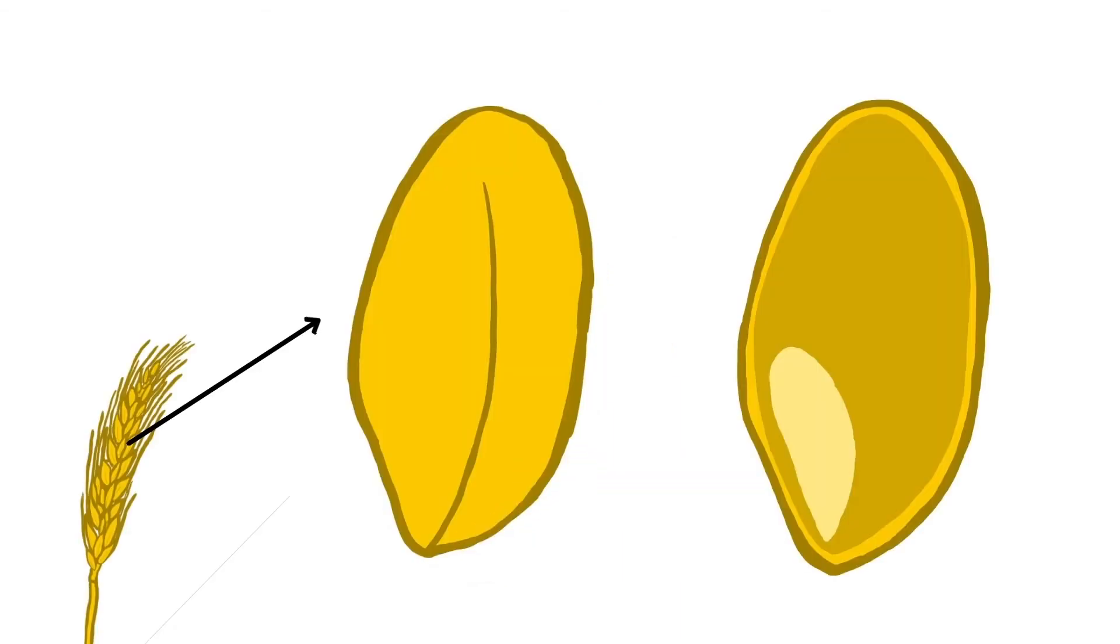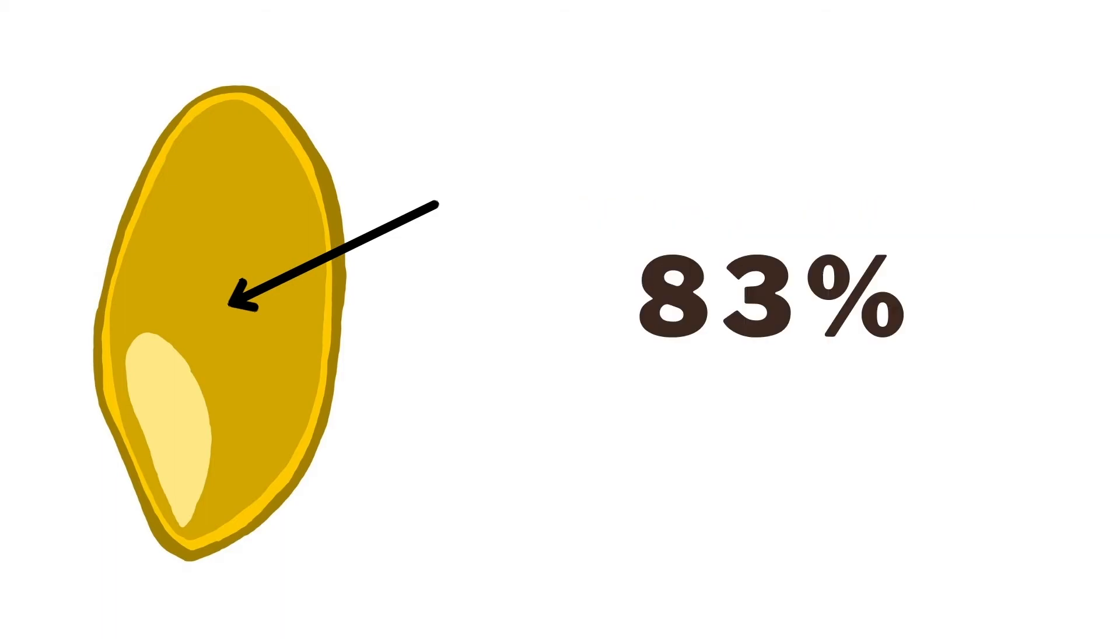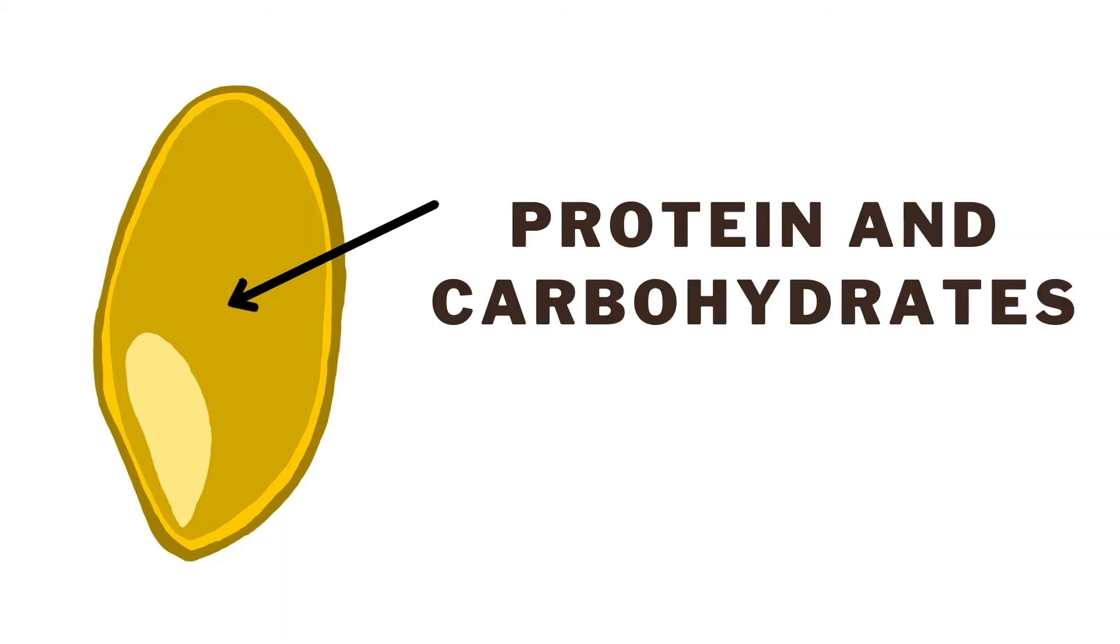The endosperm is the largest part of the kernel and represents about 83% of the kernel weight. It contains most of the protein and carbohydrates. The second largest part is the bran, which represents around 14% of the weight. The bran is high in fiber and is milled in whole wheat flour.